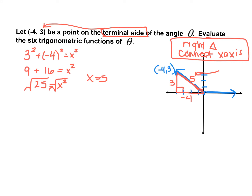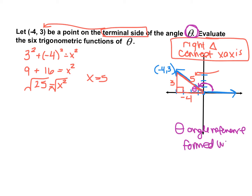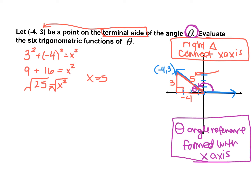Now we're going to find the six trigonometric ratios, but we need a reference angle. Just like we drew our triangle down to the x-axis, the angle we use as a reference for standard angles is always going to be the angle formed with the x-axis. The angle of reference is always the one formed with the x-axis. Now that we have our angle drawn, we can start finding all six trigonometric ratios.